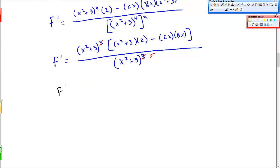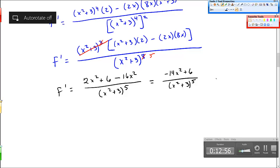I have one more line. f prime is, all of this cancels. So here I'll multiply this, 2x squared plus 6, minus 16x squared. x squared plus 3 to the fifth. And that's all equal to negative 14x squared plus 6, over x squared plus 3 to the fifth. And that should be a final answer. Okay, let me know if you have questions.